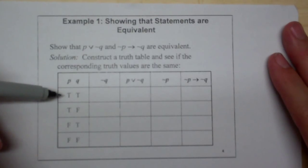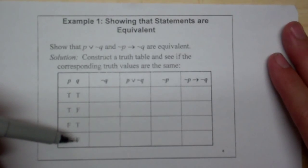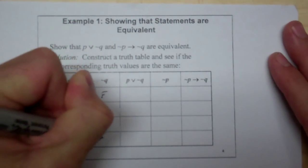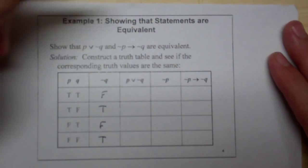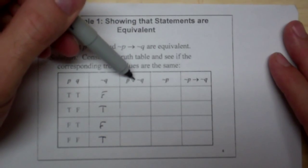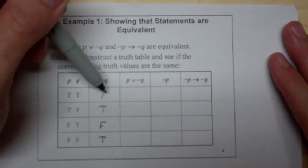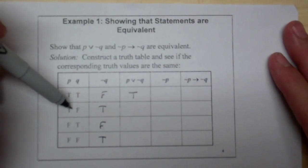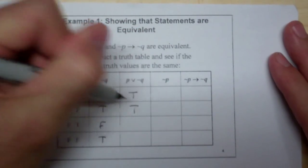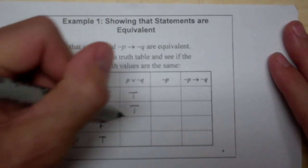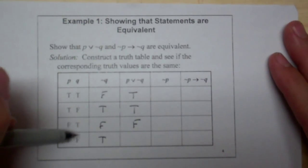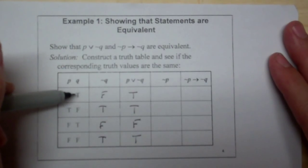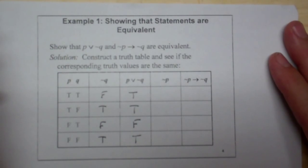We start the table as we always do: P is T, T, F, F and Q is T, F, T, F. Not Q is therefore F, T, F, T. This allows us to figure out P∨¬Q. True-or-false is true because all you need is one true. True-or-true is true. False-or-false is false. False-or-true is true, because all you need is at least one true statement.